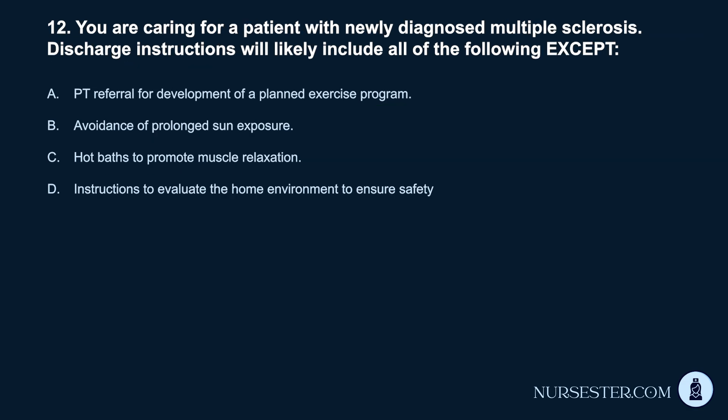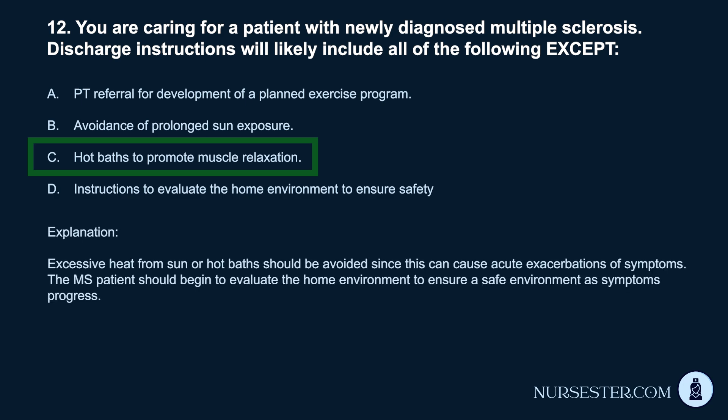Question 12. You are caring for a patient with newly diagnosed multiple sclerosis. Discharge instructions will likely include all of the following except: a. PT referral for development of a planned exercise program. b. Avoidance of prolonged sun exposure. c. Hot baths to promote muscle relaxation. d. Instructions to evaluate the home environment to ensure safety. Correct answer: c. Hot baths to promote muscle relaxation. Excessive heat from sun or hot baths should be avoided since this can cause acute exacerbations of symptoms. The MS patient should evaluate the home environment to ensure safety as symptoms progress.